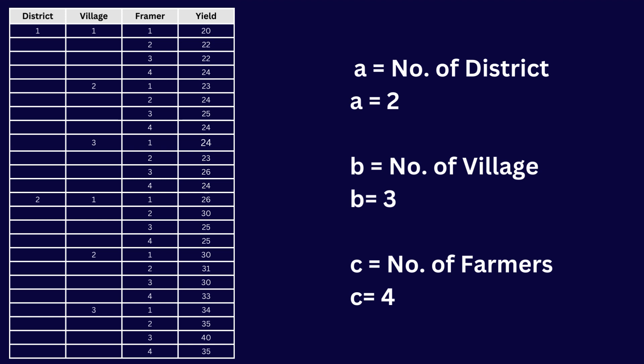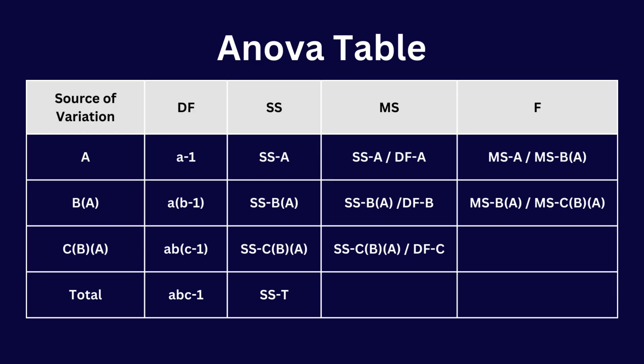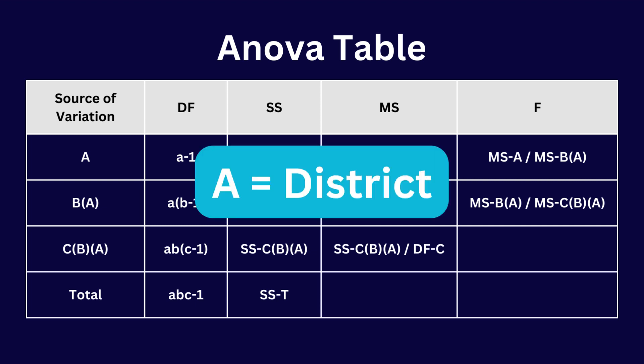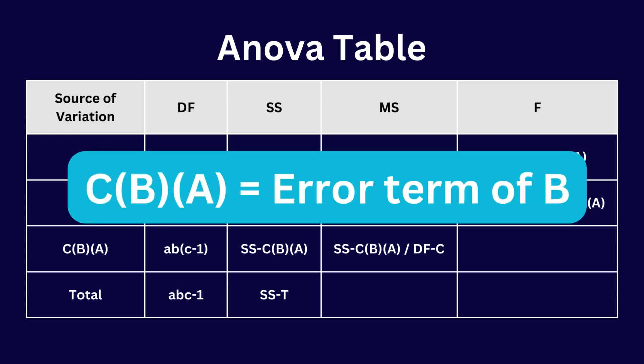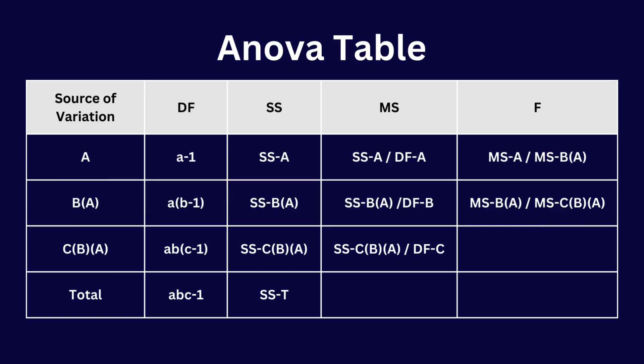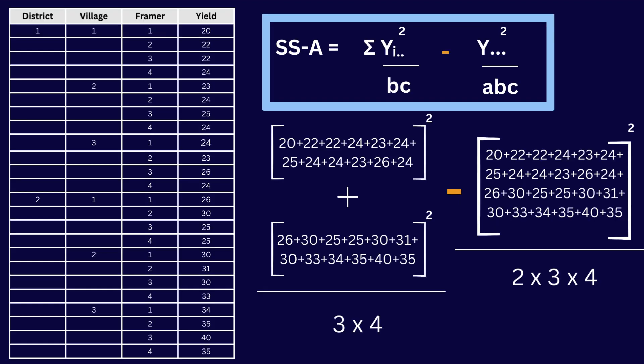This is the ANOVA table we are going to build. There are five columns: source of variation, degree of freedom, sum of squares, mean square, and F value. Factor 'A' is the district, 'BA' is the error term for factor A, and 'CBA' is the error term for factor B, where factor B is village.